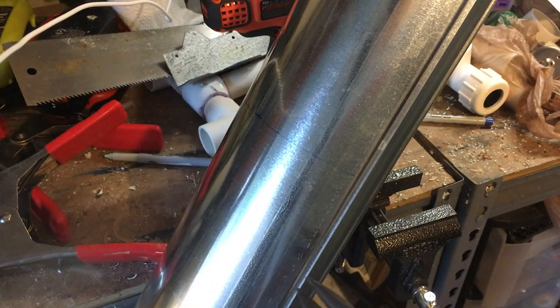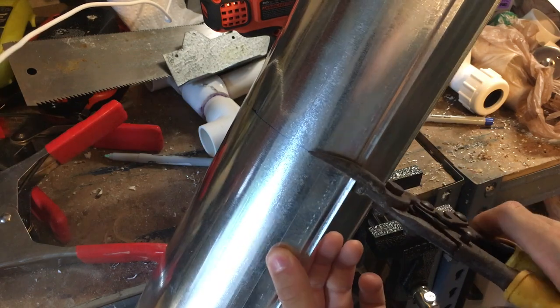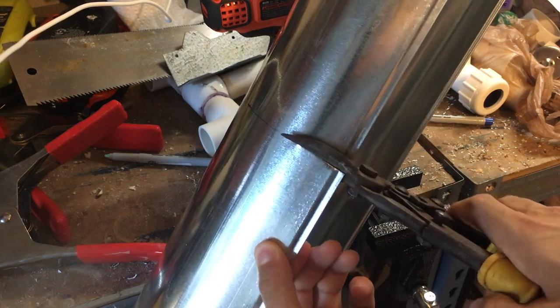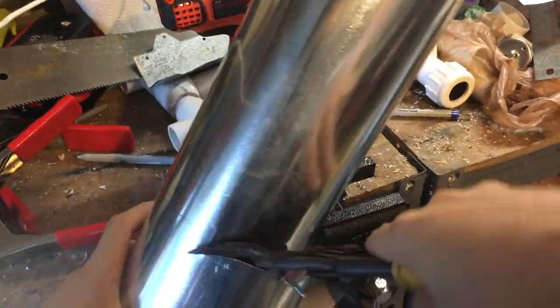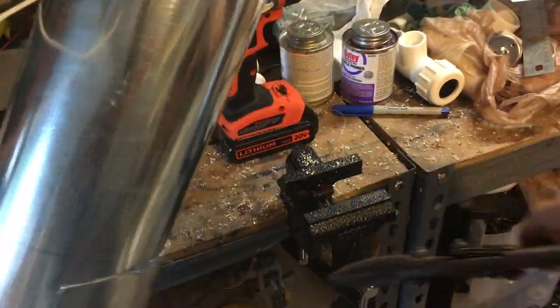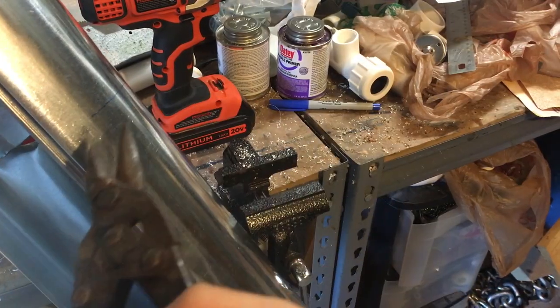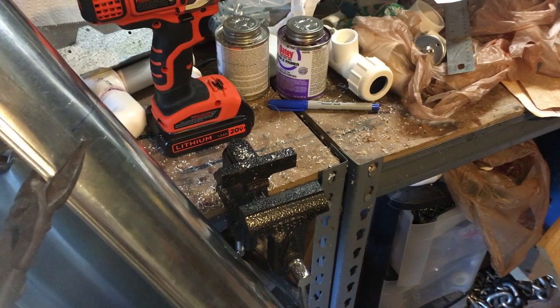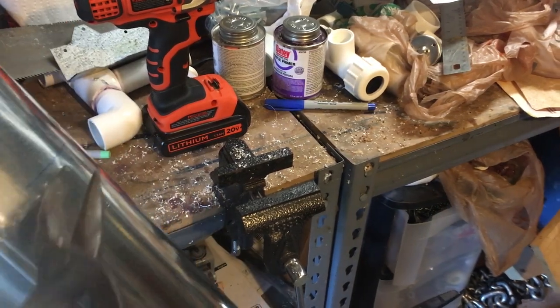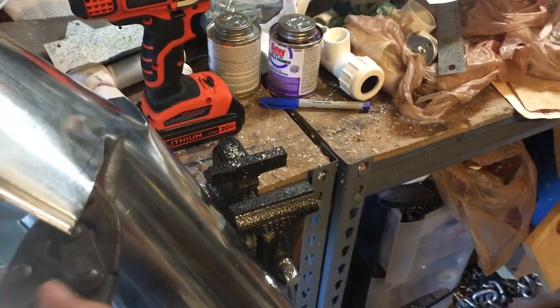To cut the steel I used some tin snips. I wouldn't say tin snips are the best tool for the job, but it's what I had lying around and they definitely worked. What I found I had to do was tackle it from both sides and also use a two-pass process.